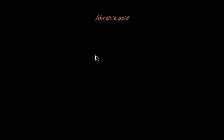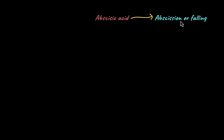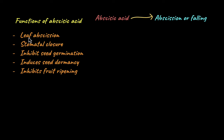With this we'll move on to our last plant growth regulator — abscisic acid, which is a plant growth inhibitor. The word 'abscisic' is derived from the term abscission, which means falling off of plant parts. So the major function of abscisic acid is leaf abscission — it promotes the falling off of old, damaged leaves from the plant body.